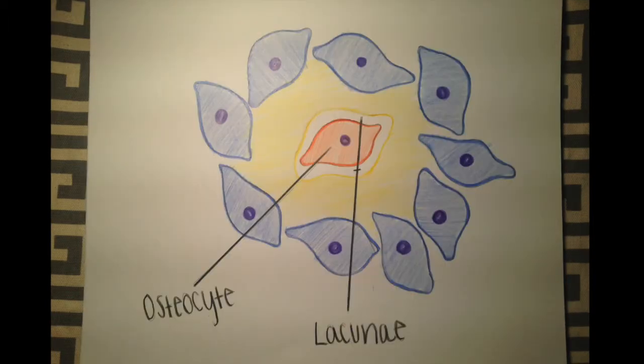When osteoblasts are surrounded by a calcified bone matrix, they can differentiate further into osteocytes, housed in spaces called lacunae.